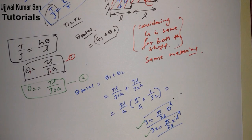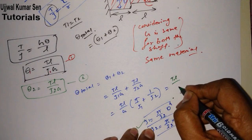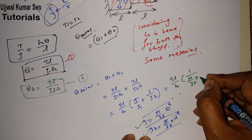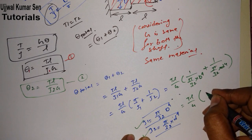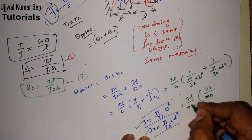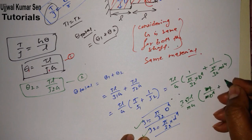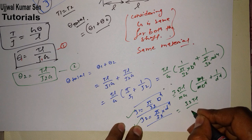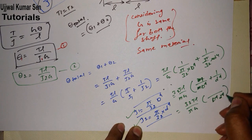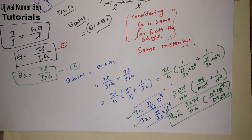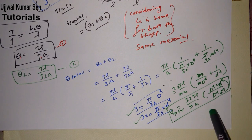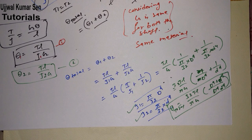So θ_total = (TL/G) × [1/((π/32)D⁴) + 1/((π/32)d⁴)], which simplifies to θ_total = 32TL / (πG) × (1/D⁴ + 1/d⁴), or equivalently θ_total = 32TL(D⁴ + d⁴) / (πG·D⁴·d⁴). This is the formula for total angle of twist for shafts in series.